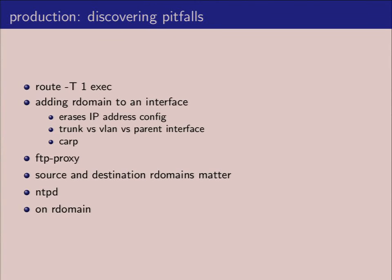As I mentioned earlier, when you add a routing domain to an interface, it erases the IP address configuration on the interface. We looked at that as a way to avoid people leaking information from their network. Because on a routing domain network, just because you have 10.0.0.1 doesn't mean that has the same meaning within all of your routing domains — it may or it may not.